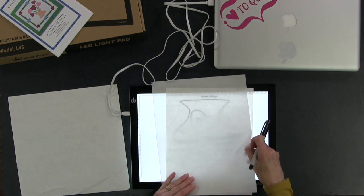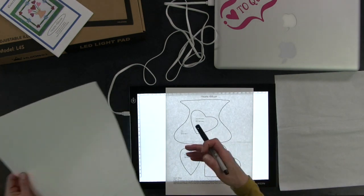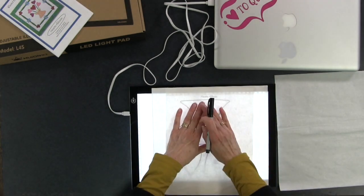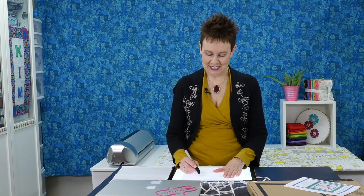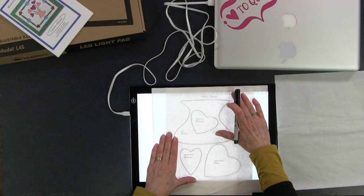All the different shapes... and if I wanted to do needle turn applique and trace these pieces onto freezer paper—I already did fusible web, didn't I?—you can see that I can see through the freezer paper as well.